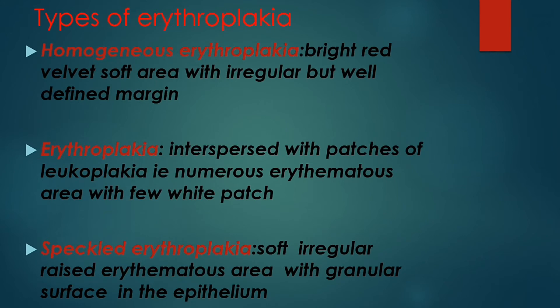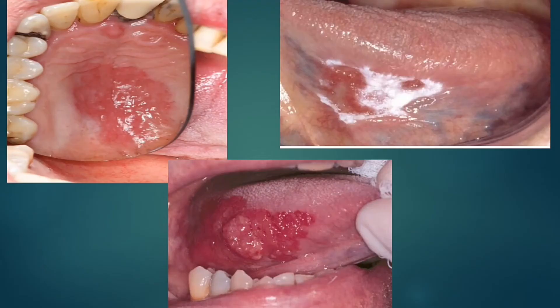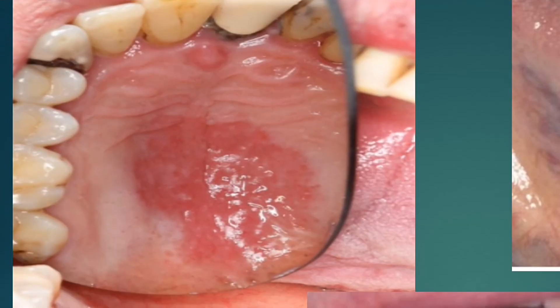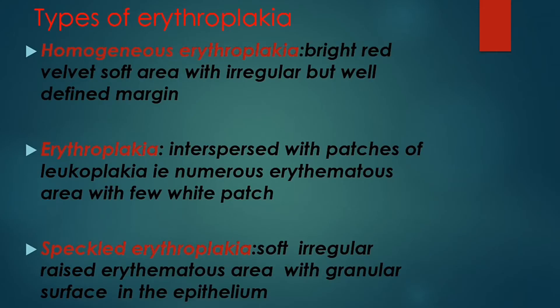There are three types of erythroplasia. The first is homogeneous erythroplasia, which presents as a bright red, velvet, soft area with an irregular but well-defined margin. As seen in the picture, it is bright red in color, soft, and although its outline is irregular, the margin is clearly defined and distinguished from the normal mucosa.